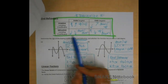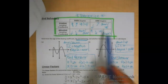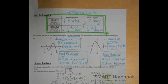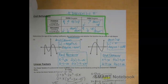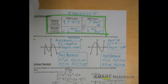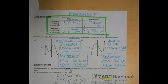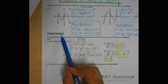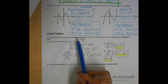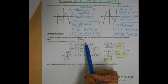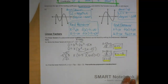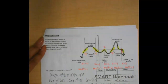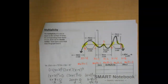End behaviors is pretty much memorizing a chart and thinking back to the parent function graphs. If you have a function with an even or odd degree, or a negative or positive leading coefficient, what's going to happen to the far ends of your graph? That also helps you with your linear factors. Your linear factors are the same thing as your x-intercepts, and we use them in combination with multiplicity to actually graph your function.